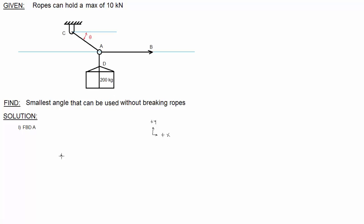So at A, we've got three things going on. First of all, I'll call this force AD. Next, we've got force AB going towards the right. Finally, we've got force AC going up and towards the left.